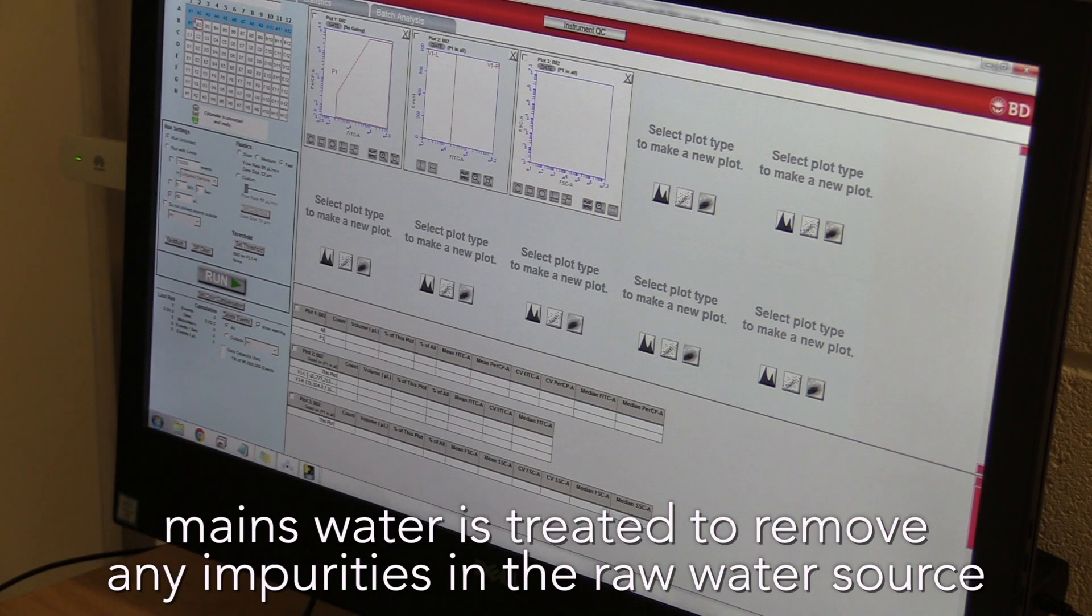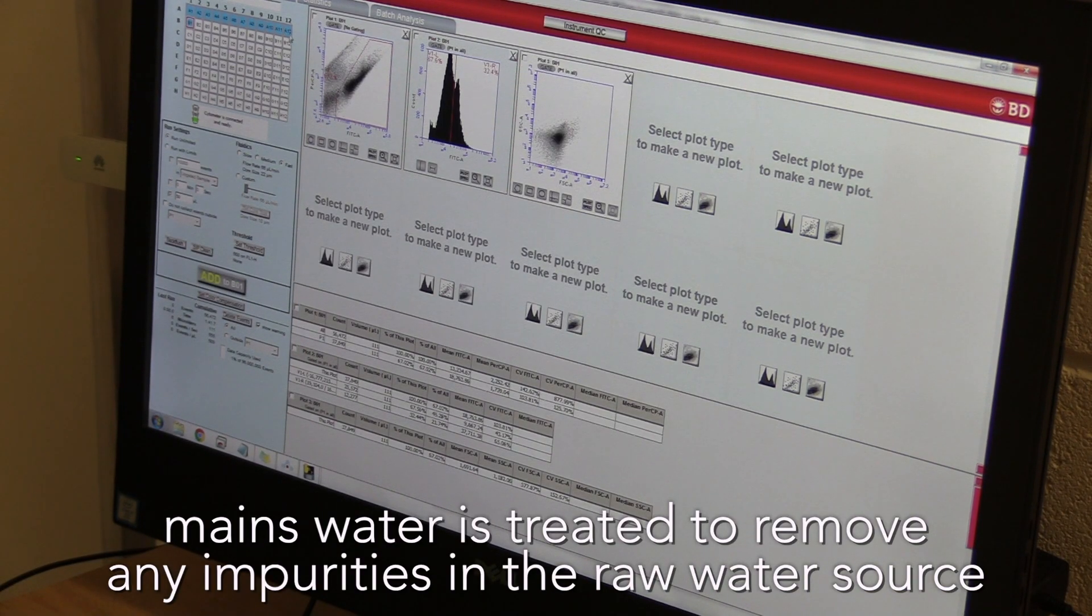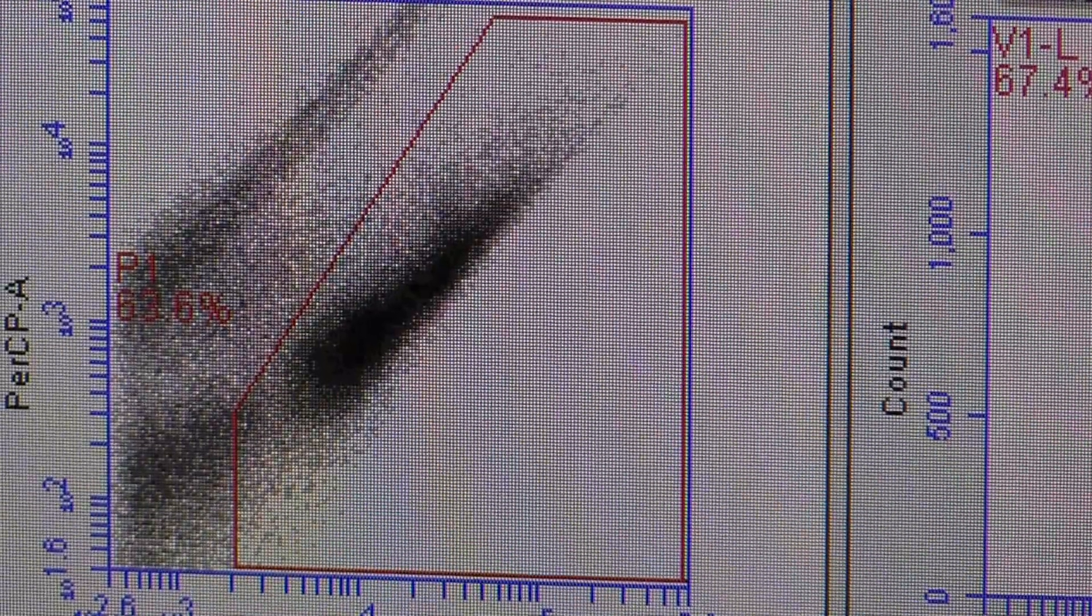Your mains water is treated to remove any impurities that may be present in the raw water source. The way we treat your water depends on where it has come from.